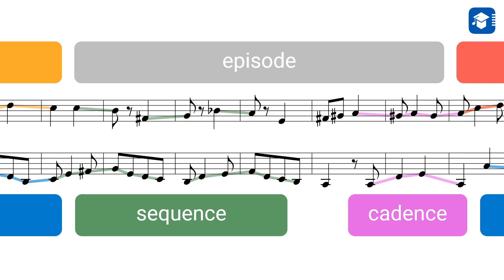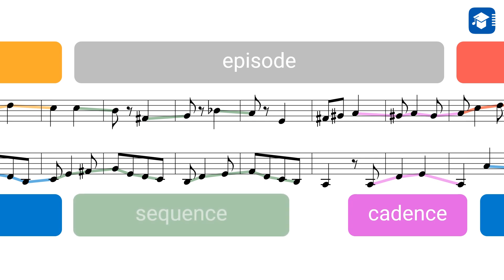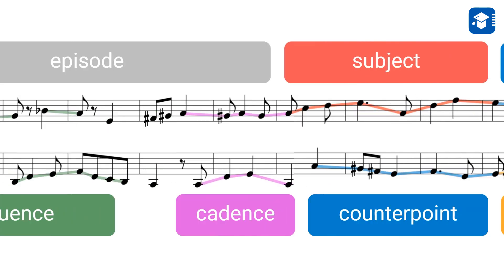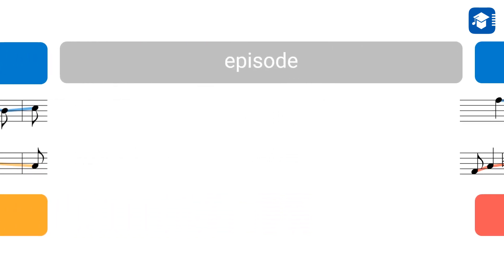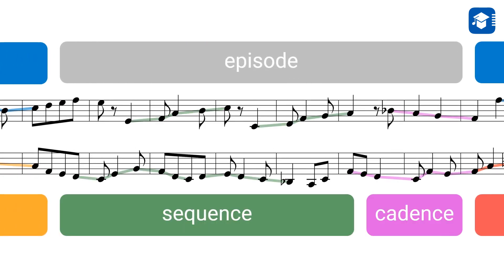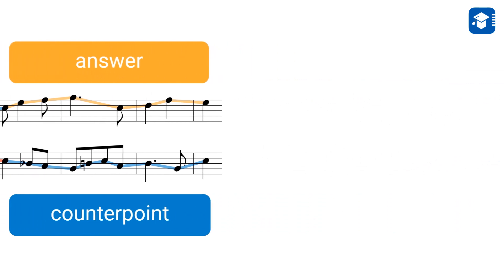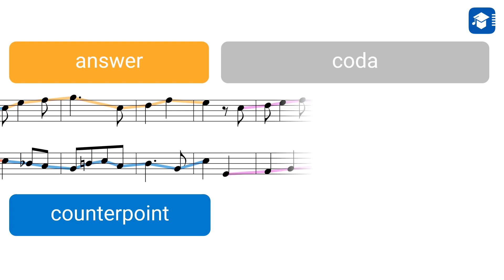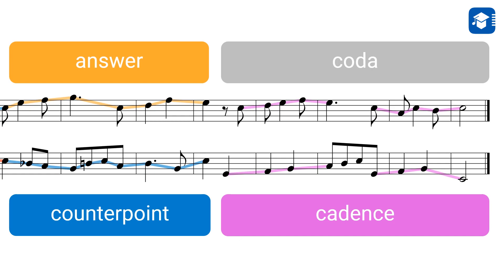If we combine our two-part sequence with the harmonic turn, our episode sounds like this. Using the same approach, we compose a second episode. After the last development section, we do not need to alter the key again. We can now compose an ending for our fugue — the coda. We confirm the home key once again with a cadence and conclude the fugue.